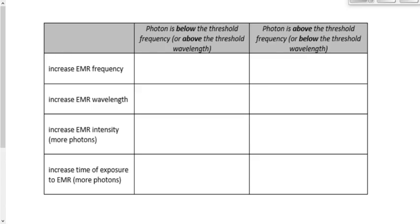If we have light that is below the threshold frequency — the threshold frequency is the minimum EMR frequency necessary to eject an electron — so if red light is not causing electrons to be ejected, orange light is not causing it, but yellow light all of a sudden starts causing electrons to be ejected, then the threshold frequency would be in the range of yellow light. Anything below that, nothing happens; anything above that, electrons are ejected. The threshold wavelength is inversely related: if the minimum frequency is the threshold frequency, then the maximum wavelength is the threshold wavelength.